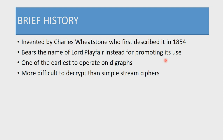Therefore, it is much more difficult to decrypt than simple stream ciphers like the Julius Caesar Cipher. Stream ciphers are encryption mechanisms which encrypt a single letter or character at a time. But the Playfair Cipher operates on digraphs, encrypting a pair of letters at a time, which makes it much harder to perform cryptanalysis or to decrypt by a third party interceptor.